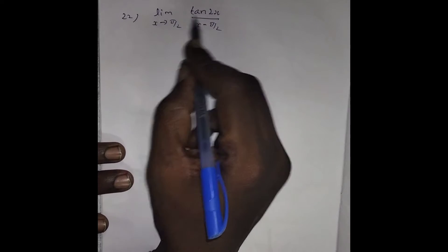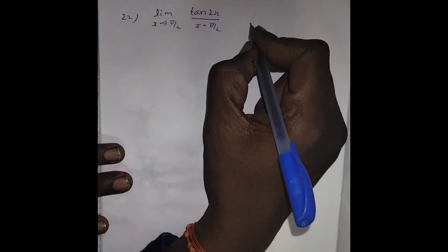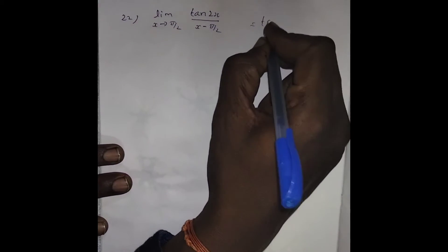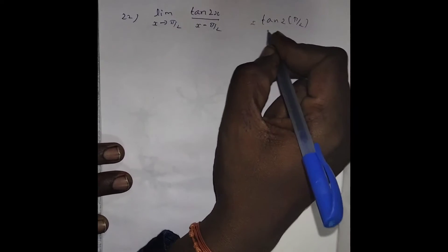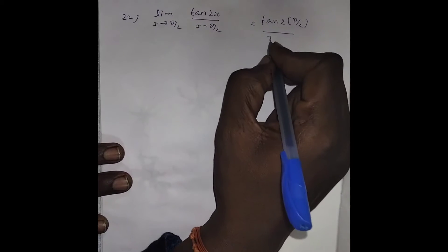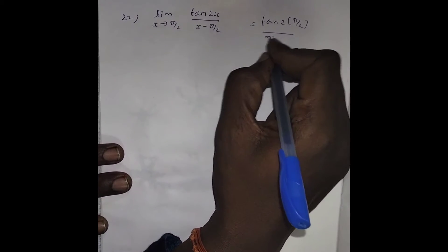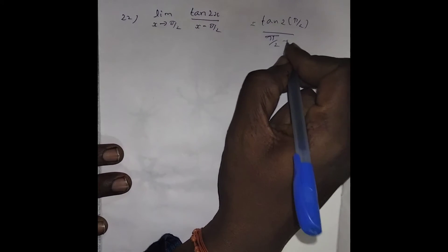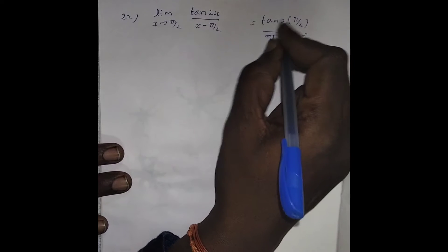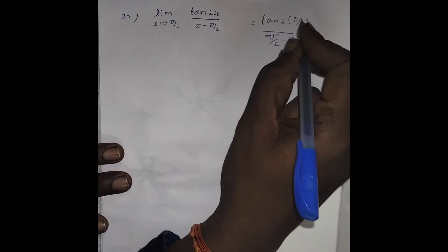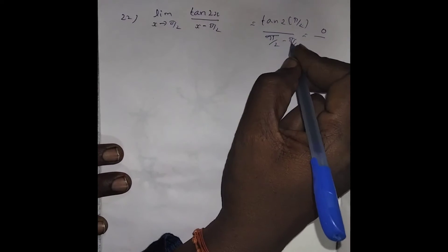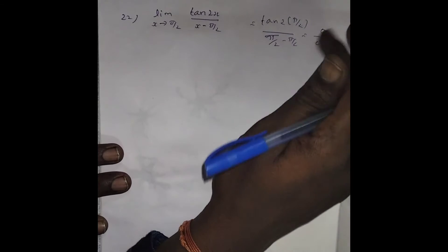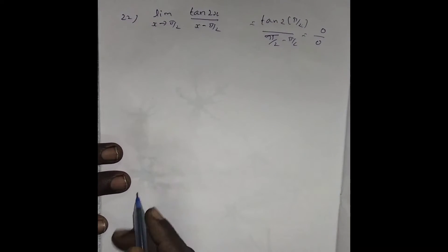If we apply the limit value x tends to π/2 to the question directly, we get tan(2 · π/2) / (π/2 - π/2). The 2 cancels, tan(π) value is 0, and π/2 - π/2 also becomes 0. So we get the indeterminate form 0/0.